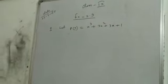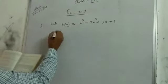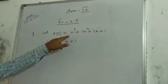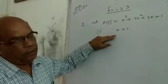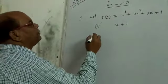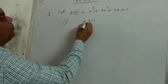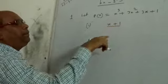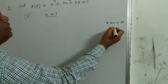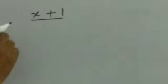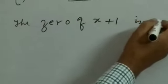Number 1: we have to find the remainder for x plus 1. If we divide this polynomial by x plus 1 by long division method, we will get the remainder. But now we will find the remainder using the Remainder Theorem — the process is very simple and easy. We will find the zero of this polynomial. The zero of x plus 1 is minus 1, because x plus 1 equal to 0 implies x equal to minus 1.